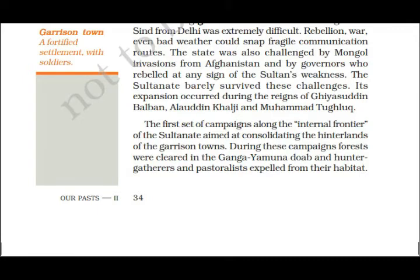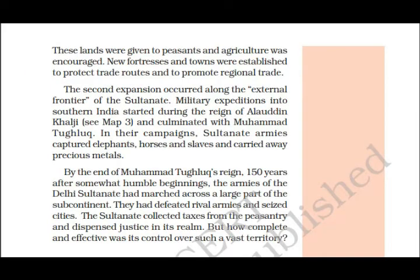The first set of campaigns was along the internal frontier of the Sultanate, aimed at consolidating the hinterlands of the garrison towns. During these campaigns, forests were cleared in the Ganga-Yamuna doab, and hunter-gatherers and pastoralists were expelled from their habitat. Peasants were given land for farming, and many forts were built. Garrison towns were expanded to improve trade routes and regional commerce.